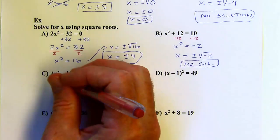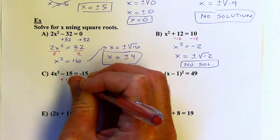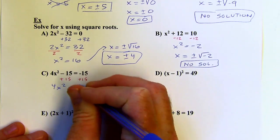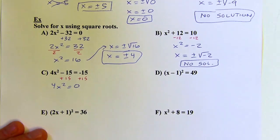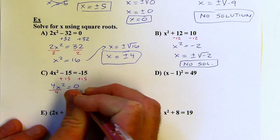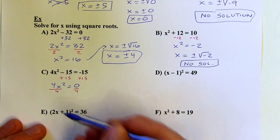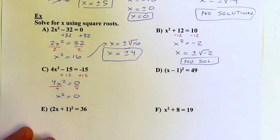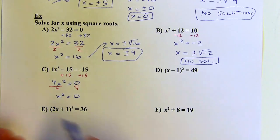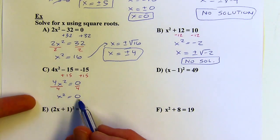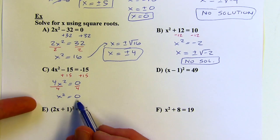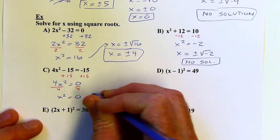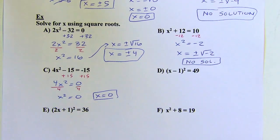I'm trying to isolate x squared here, so let's add 15. So 4x squared will equal 0. Then I want to isolate x squared, so I'll divide by 4. 0 divided by 4 is 0 — it's okay to have 0 on the top of a fraction, just not on the bottom. So x squared equals 0, and when I take the square root of both sides, 0 can't be positive or negative, so x equals 0.